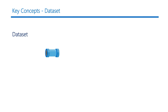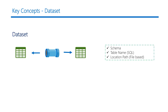Each activity can have zero or more input datasets, which represent the input for an activity in the pipeline, and they produce one or more output datasets that represent the output for an activity in the pipeline. Datasets contain information like the schema of the data, the table name if it is a SQL-based dataset, or a location path if it is a file-based data like blob storage.